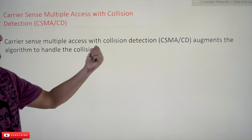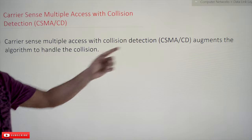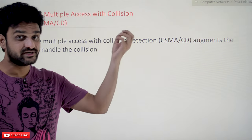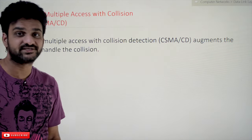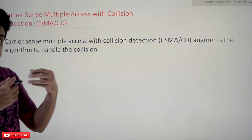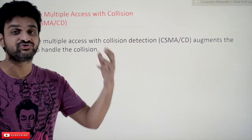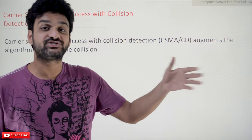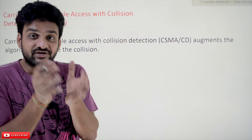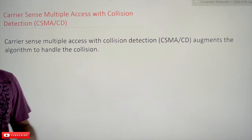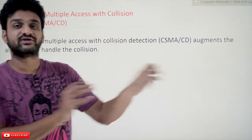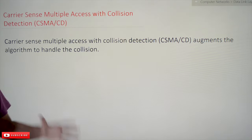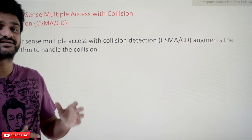In this class we'll try to understand Carrier Sense Multiple Access with Collision Detection. What it means is that it augments the algorithm to handle the collision. In CSMA/CD, the sender which transmits the data has to identify any collision if one occurs during transmission — it is the responsibility of the sender. This also means there will not be any acknowledgments involved in the network. Ethernet is the network which was built based upon the concept of CSMA/CD.